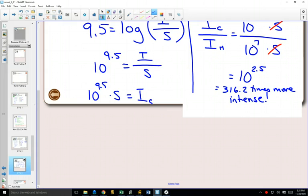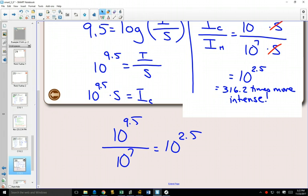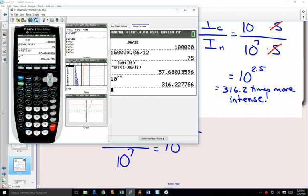It is accepted on the exam if you don't use the formula per se and get intensity in terms of standard and then divide them. They have accepted that if you know one is 9.5 and the other is 7 and solve it like that, that shortcut, that simple method, it's fine. I typed it into my calculator, 10 to the 2.5.